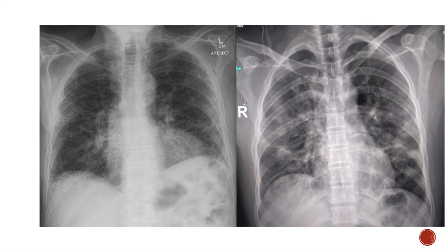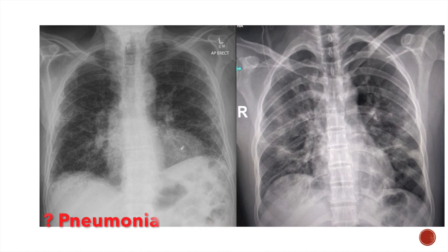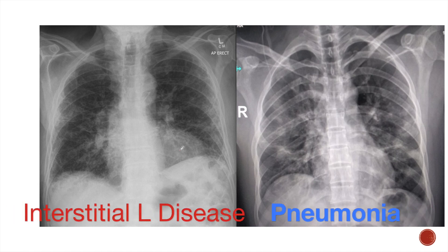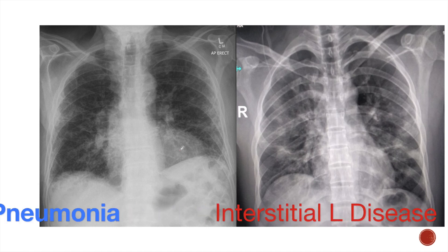Look at these two X-rays. Both these patients presented with dyspnea and cough for variable duration. Can you differentiate which one of these patients has a diagnosis of interstitial lung disease and which one has pneumonia? Pause this video for a few seconds and look at the X-rays. If you can't differentiate interstitial lung disease from pneumonia with confidence, then this video is for you.